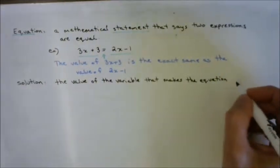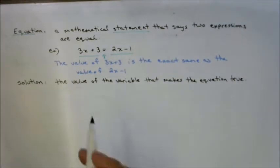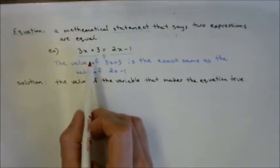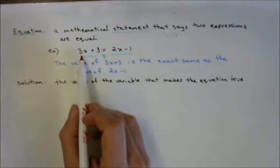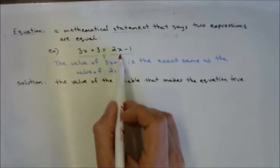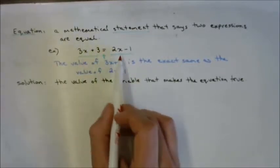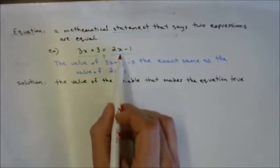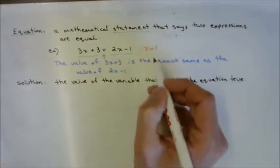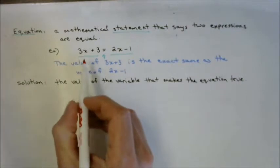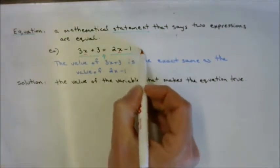Looking back at our example — what about x? How do we know if it's true or not? If we put in 1 for x, on the left we get 3 plus 3, which is 6. On the right, with x as 1, we get 2 minus 1, which is 1. Well, 6 does not equal 1, so x cannot be 1. Solving means finding the value of x that makes the statement true.